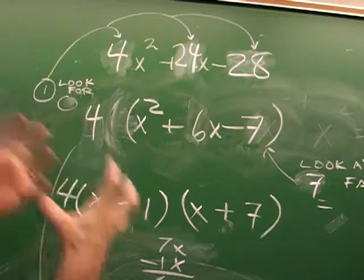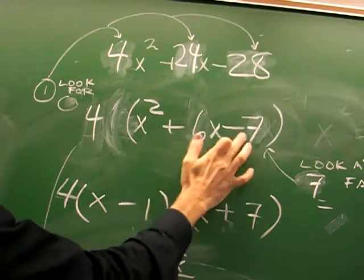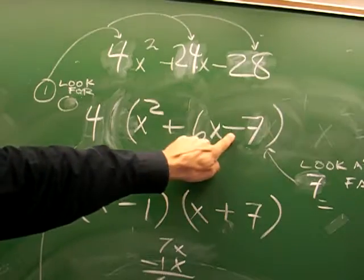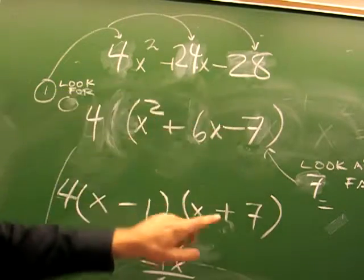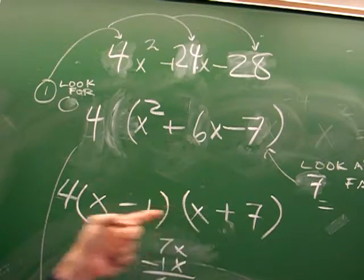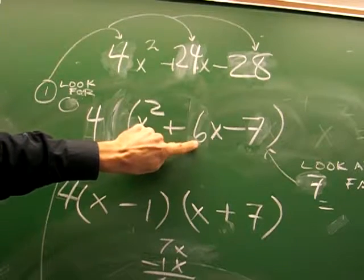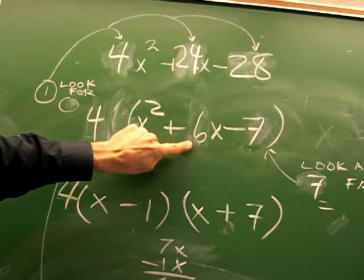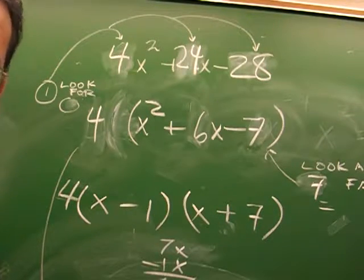You have to think, okay, what has to happen with these factors? We know it's 7 times 1, but the problem is, is it a negative 7 or a negative 1? And we found out that because it's a positive 6, it has to be a large number with a positive 7.